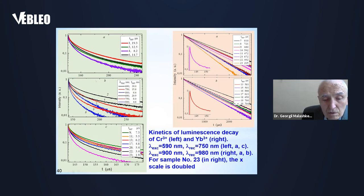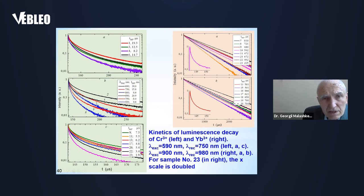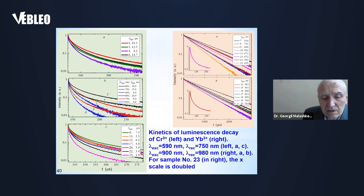This slide shows luminescent decay kinetics of chromium 3+ ions and ytterbium 3+ ions. It is seen that codoping of chromium-containing glasses with ytterbium leads to essential acceleration of chromium luminescent decay — compare curve 1 with curve 4 — which testifies to transfer of excitation from chromium 3+ to ytterbium 3+ ions.